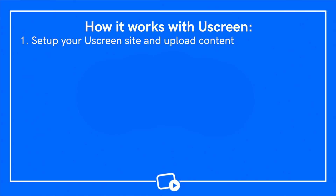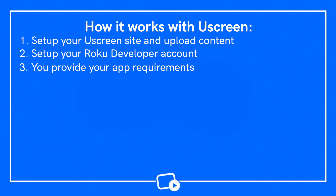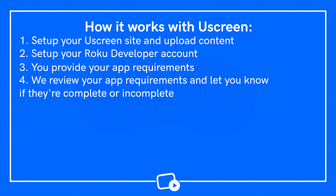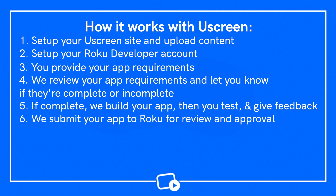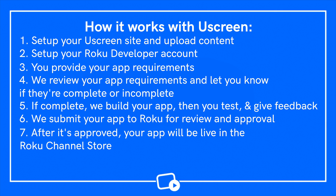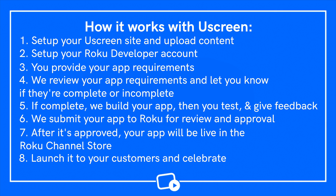Here's how it works with Uscreen. You set up your Uscreen site and upload content. You set up your Roku developer account. You provide app requirements — the assets and information needed to build your app. The team reviews your app requirements and lets you know if they're complete or incomplete. If complete, they build your app; then you test and provide feedback. They submit your app to Roku for review and approval. After it's approved, your app will be live in the Roku channel store. Launch it to your customers and celebrate. For the duration of the lease, you'll have the full support of the team, who will regularly update your app to make sure it's running optimally.